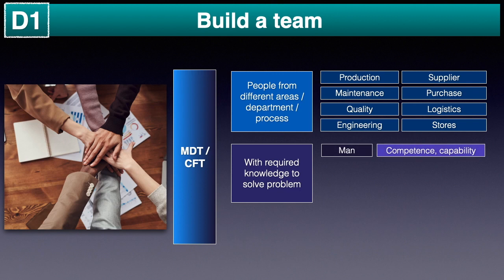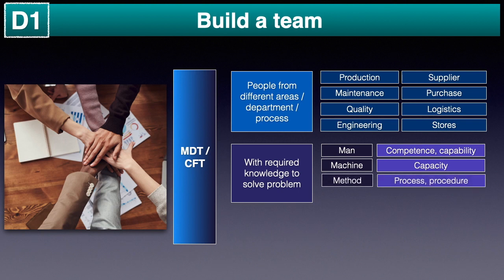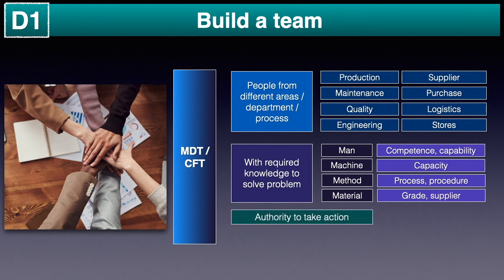The members selected need to have knowledge regarding manpower such as their competence and capability, knowledge regarding the machines used and their capacity, methods used such as the process and procedures to be followed, and knowledge of materials and grades used. The team members selected also need to have the authority to take actions as planned throughout the 8D. The team then selects a team leader.